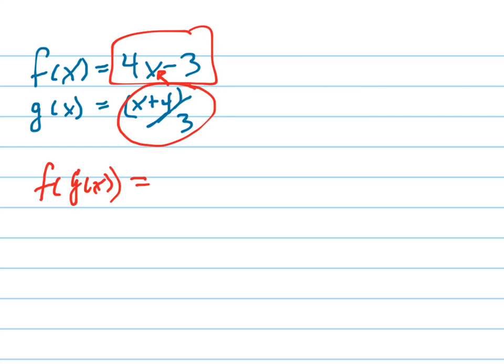So I'm going to rewrite this equation like this, 4, and then where I see the x, I'm going to put a parenthesis because x isn't going in there. g of x is going in there. g of x is x plus 4 over 3.